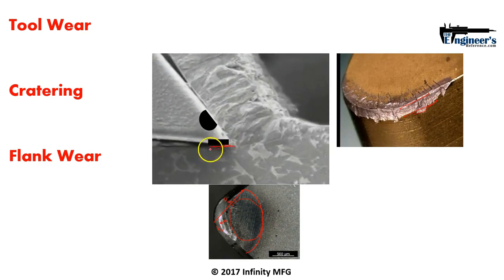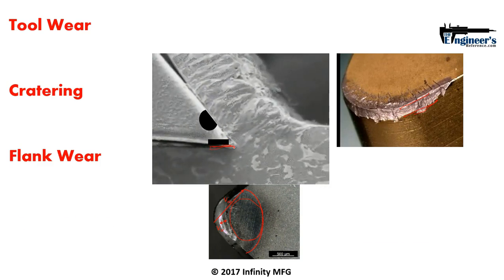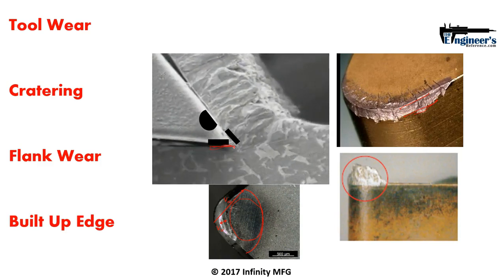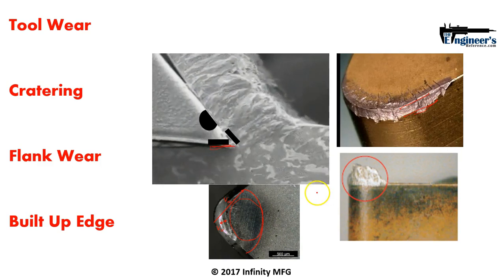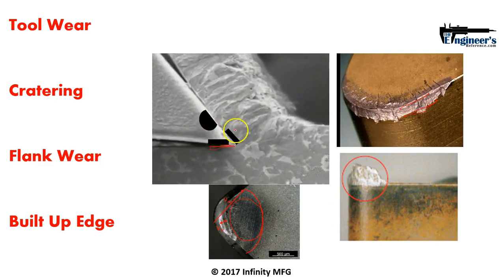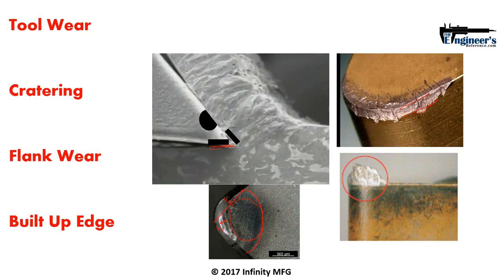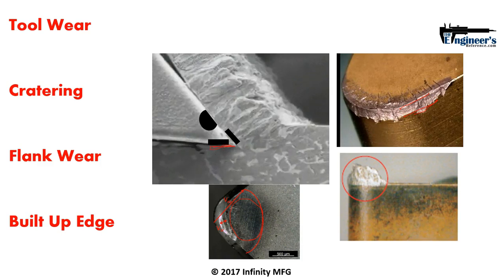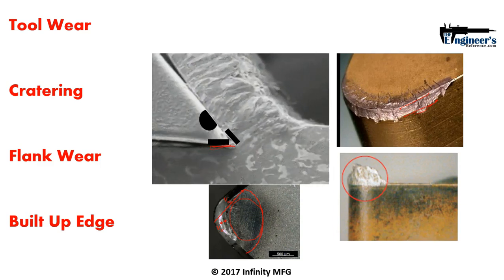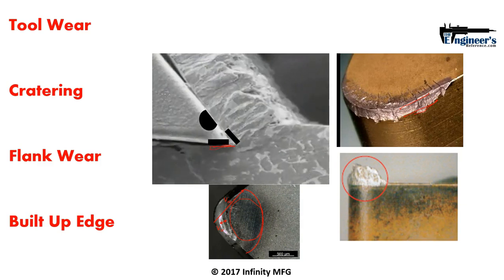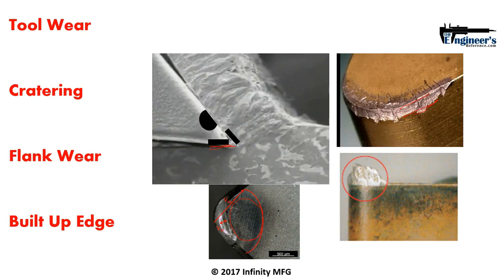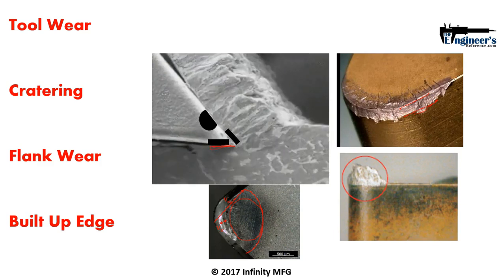The last type of wear is built-up edge, which results from the reaction between the material you're cutting and the cutting tool substrate, where material starts to build up on the tip of the tool. As it adheres, it generates more force, and as the chip runs against it, the built-up edge can break away and take some tool material with it — rupturing the tool. These three types of wear depend on material properties and your selection of cutting tool geometries, over which you do have some control.